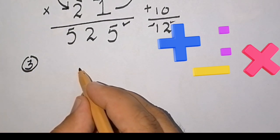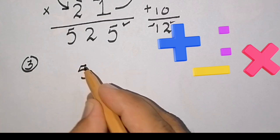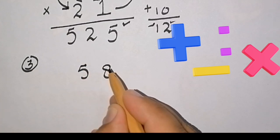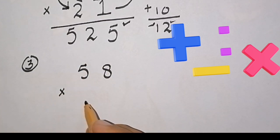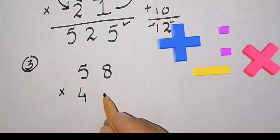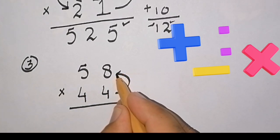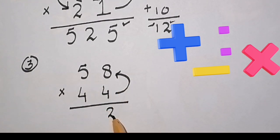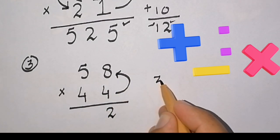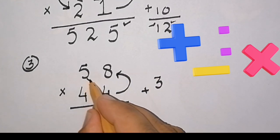Now we will multiply a bigger digit, that is 58 multiply with 44. Apply the same rule: 4 multiply with 8 is 32, so we will write 2 and carry 3.